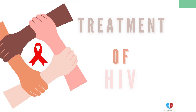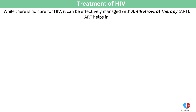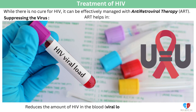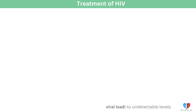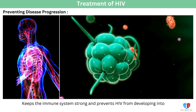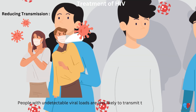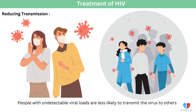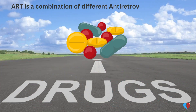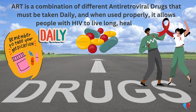Treatment of HIV. While there is no cure for HIV, it can be effectively managed with antiretroviral therapy, ART. ART helps by suppressing the virus — reducing the amount of HIV in the blood, viral load, to undetectable levels; preventing disease progression, keeping the immune system strong and preventing HIV from developing into AIDS; and reducing transmission. ART is a combination of different antiretroviral drugs that must be taken daily, and when used properly, it allows people with HIV to live long, healthy lives.